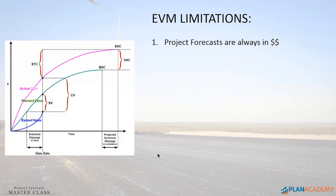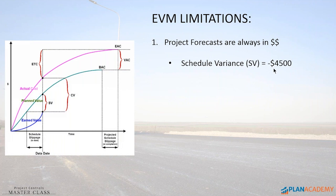For example, if I say you have a schedule variance of minus $4,500, it doesn't really help you get the picture of what's going on. My estimate to complete is $9,555 — again, it would be really nice to have those values in terms of duration.